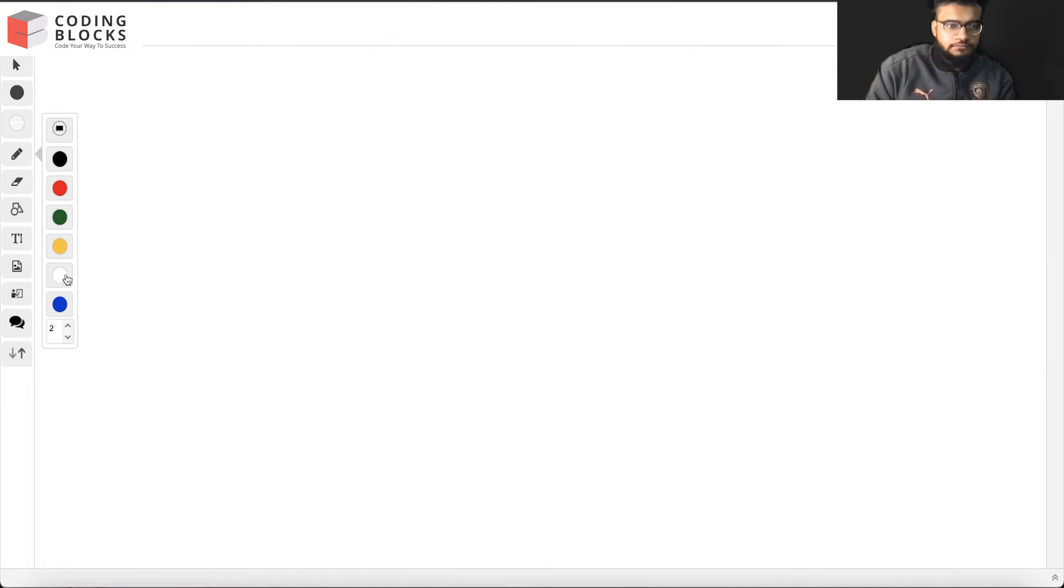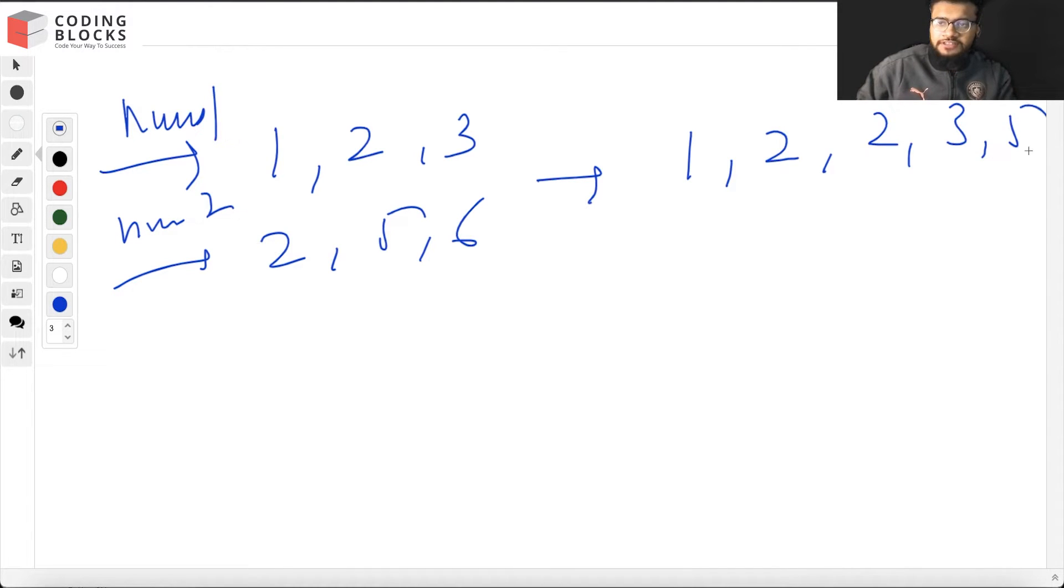Let's say we have been given 1, 2, and 3, and 2, 5, 6. These are two arrays - first nums1 and second is nums2. So we need to return 1, 2, 2, 3, 5, and 6 as this array.